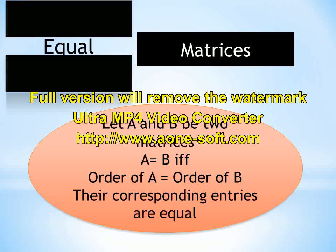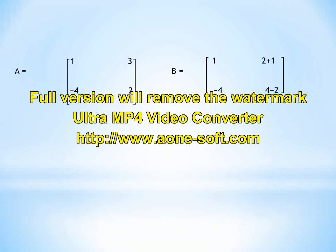The second condition is that their corresponding entries must be equal. Corresponding entries means the first element of the first matrix must equal the first element of the second matrix. Similarly, the second element of the first matrix must equal the second element of the second matrix. If the matrices fulfill these two conditions, then they are called equal matrices. Two matrices A and B are said to be equal if their orders are equal and corresponding entries are equal.